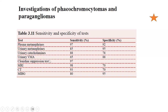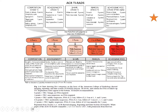For imaging modalities, MRI is the most sensitive at 98%, while MIBG scan is more specific at 95%. MRI is more sensitive than CT scan, which has a sensitivity of 93%. This is a very important chart from the Oxford Handbook.